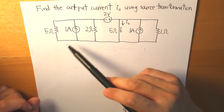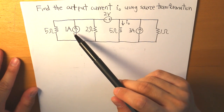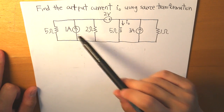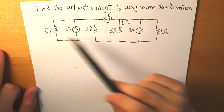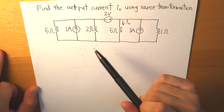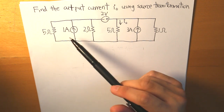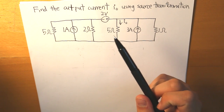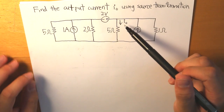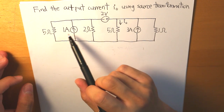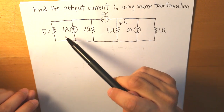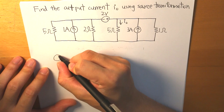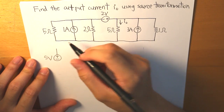First, let's look at our independent sources. We have three independent sources, and we can identify that two of them — the 1 amp current source and the 3 amp current source — are each in parallel with a resistor. Using source transformation, we'll convert these current sources into voltage sources to make finding I0 easier. The 1 amp source is in parallel with 5 ohms, so we multiply 1 amp by 5 ohms to get a voltage source of 5 volts, which will be in series with 5 ohms.